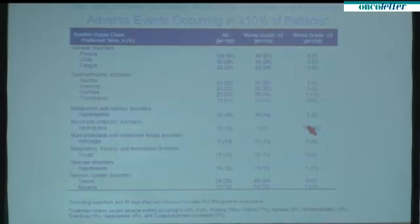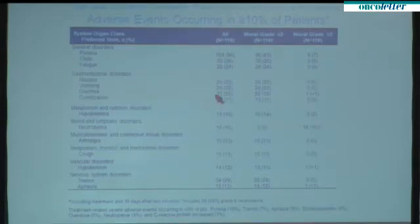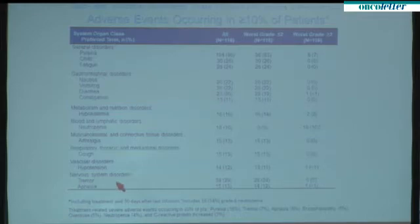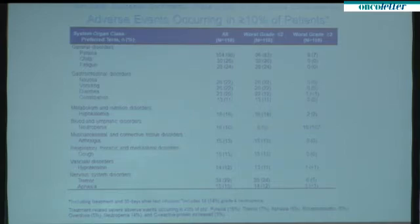The adverse events profile — showing events with a frequency of more than 10% — has two types. The first type are events correlated to cytokine release, like fever, chills, and fatigue, observed in most patients, but in most cases only grade one or two. The other type are neurologic events; the most frequent symptoms were tremor and aphasia in 29% and 13% of patients respectively, also mostly grade one or two. However, these events are clinically relevant because they can lead to treatment interruptions in some patients.